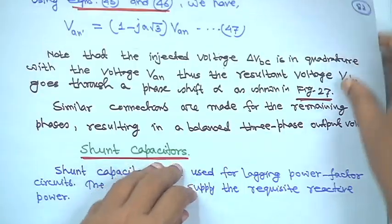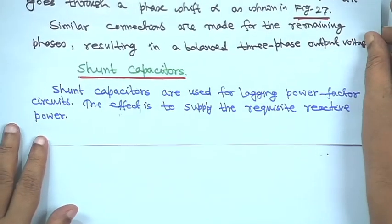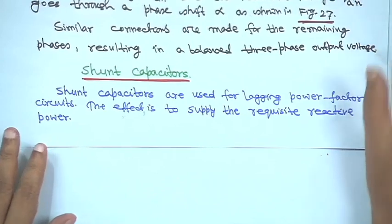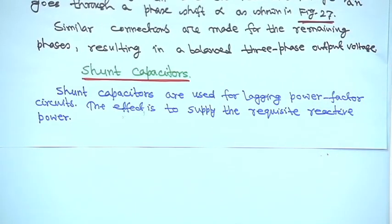Next we will come to two things: shunt capacitors and series capacitors. Shunt capacitors are basically used for a lagging power factor circuit. When you have solved AC circuit theory problems, you might have solved the problem where a capacitor is connected across the load to improve the power factor.